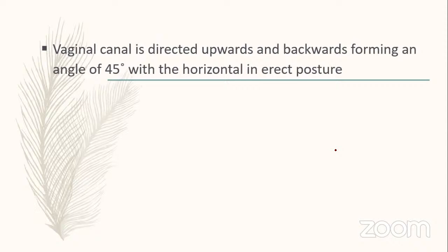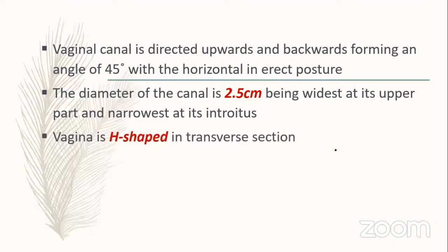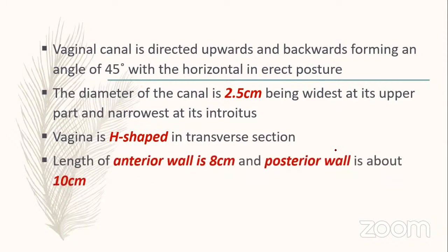The vaginal canal is directed upwards and backwards, forming an angle of 45 degrees with the horizontal in the erect posture. The diameter is 2.5 cm, widest at its upper part and narrowest at the introitus. In transverse section vagina is H-shaped. Length of the anterior wall is 8 cm and posterior wall is 10 cm.